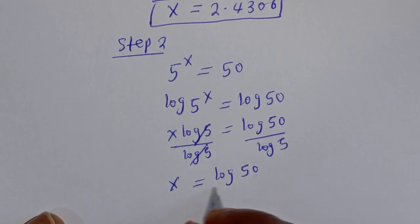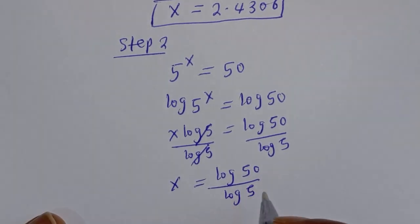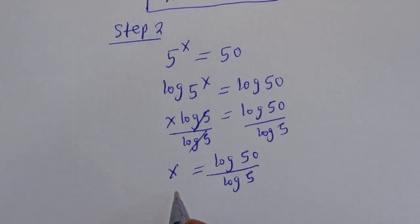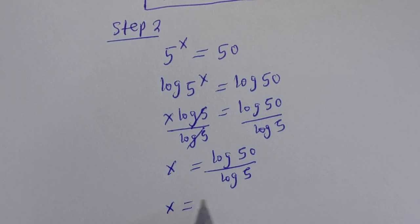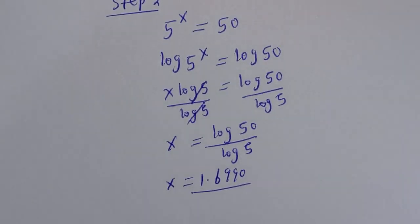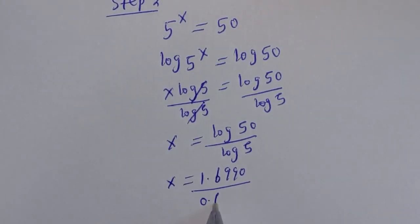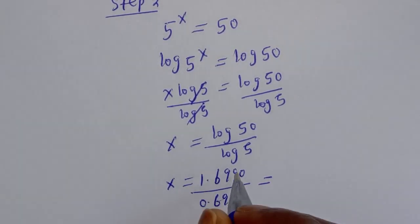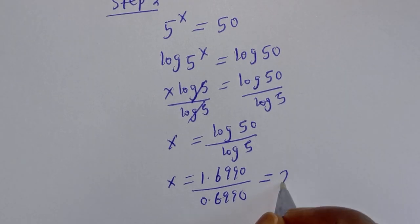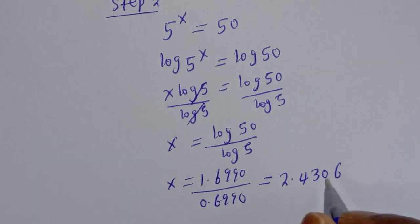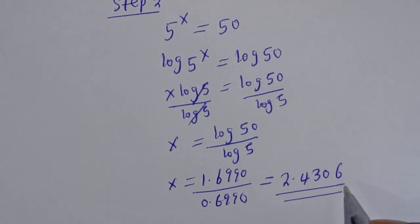Using a calculator: log 50 is equal to 1.6990, and log 5 is equal to 0.6990. Dividing 1.6990 by 0.6990 gives us s equal to 2.4306. This is the final answer.